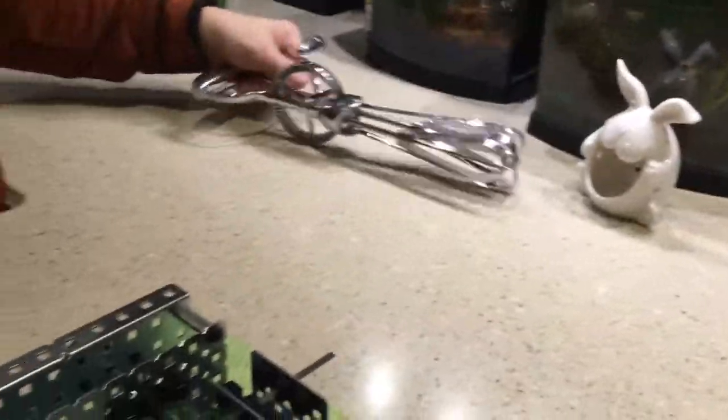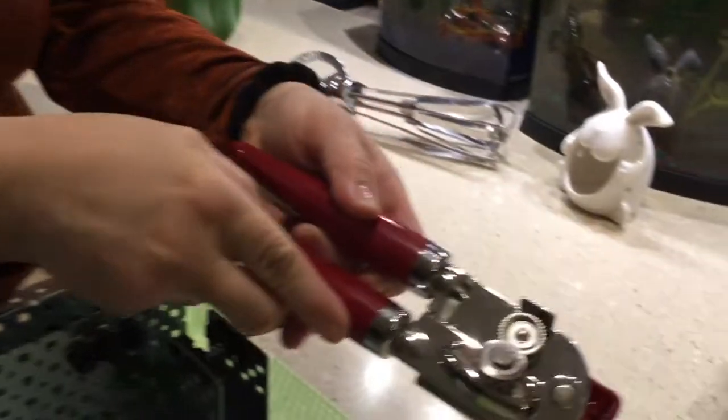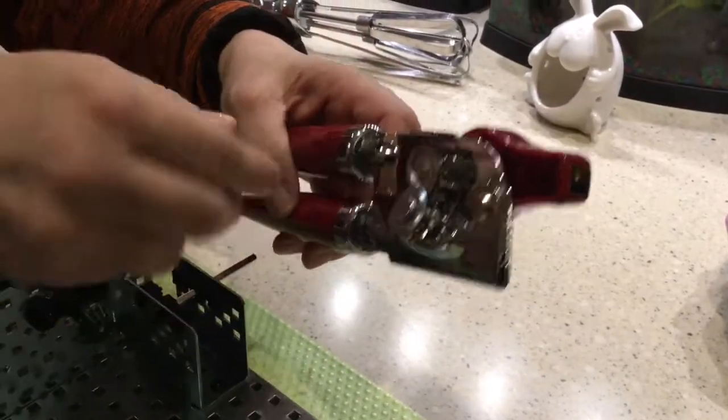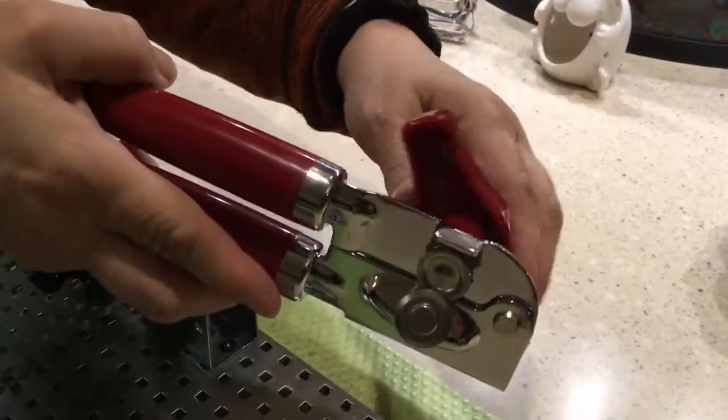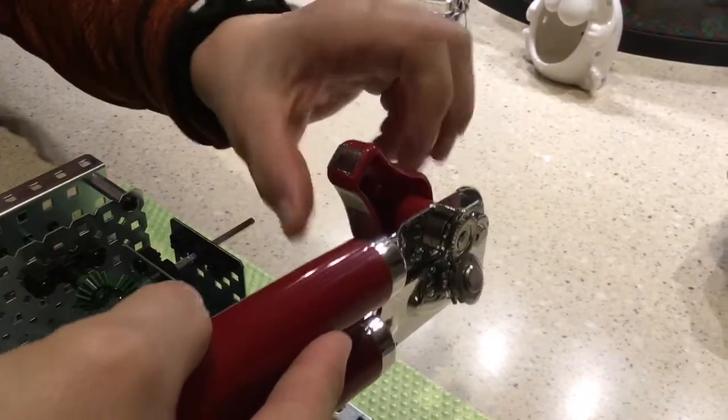The second thing I want to show you is a can opener. Now this is not at a 90-degree angle. This is at a smaller angle, but when I twist this, you'll notice that the gears are beveled and that they move.